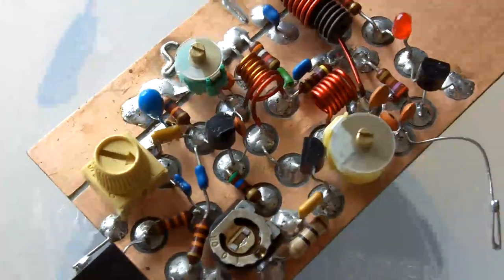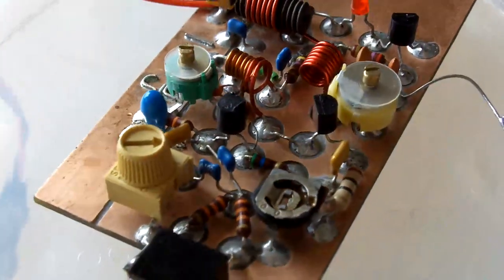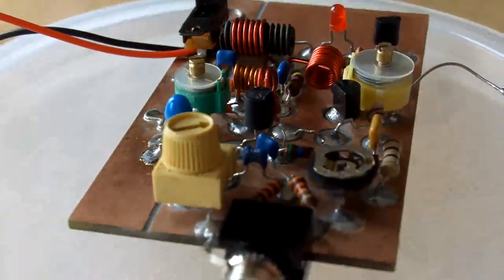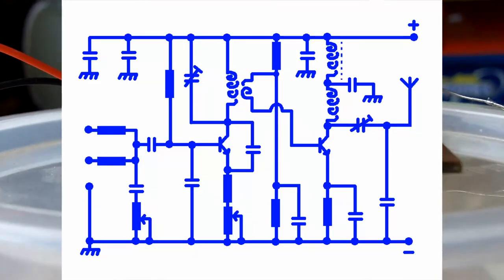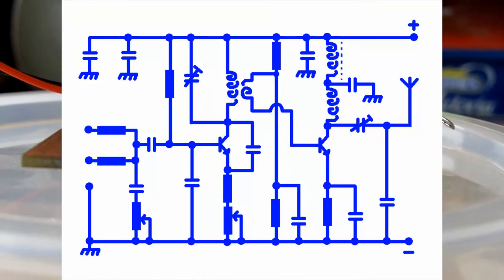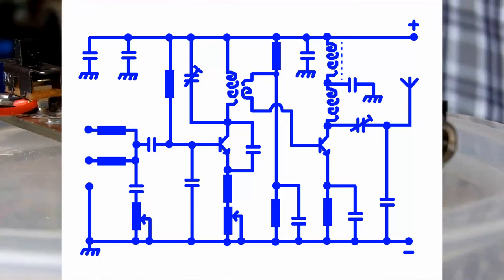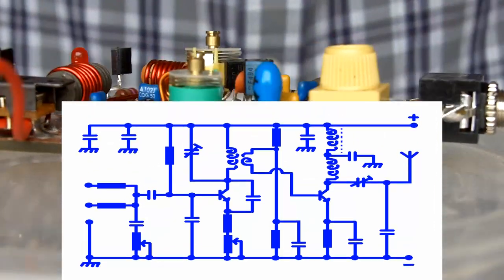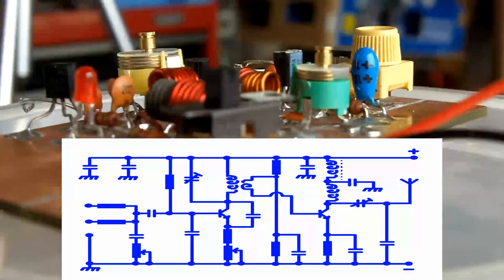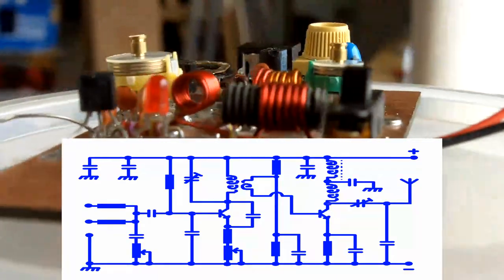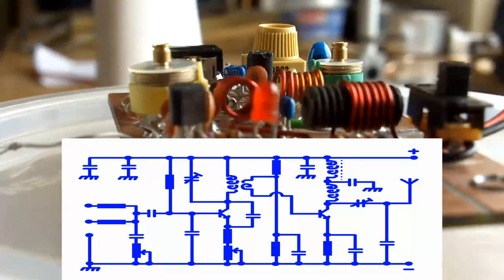The original circuit shows two transistors. The first transistor is the VHF oscillator that's modulated by the input audio signal, and the second transistor is a Class A power amplifier.